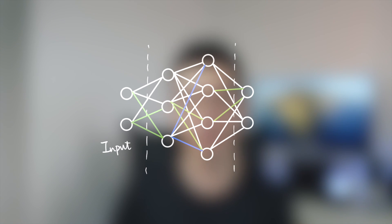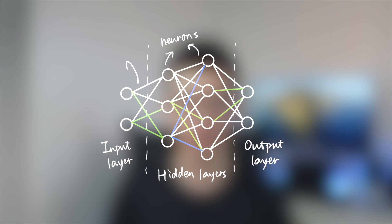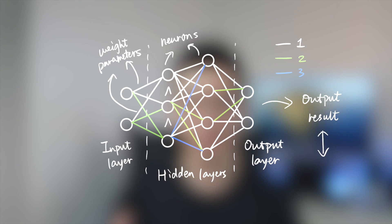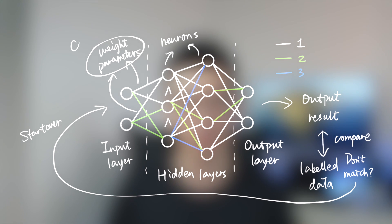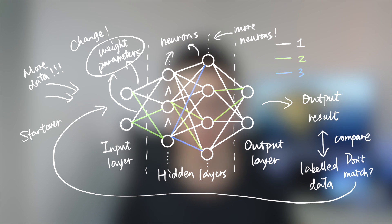Let's break it down. A neural network is composed of an input layer, some hidden layers, and an output layer. In each hidden layer there are many neurons. Each connection between neurons has a weight parameter — different colors represent different weights. A bigger weight connection makes the corresponding neuron more important. After the signal passes through all the layers, the network generates a result. The network then compares the generated result with the labeled data. If they don't match, the weight parameters are adjusted and the process restarts. This repeats until optimal weight parameters are found. To make neural networks more powerful, we need more neurons and more training data to get more reliable weight parameters.